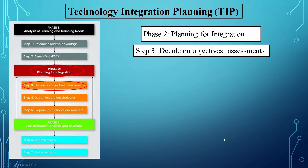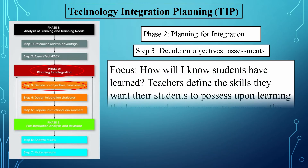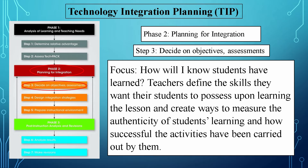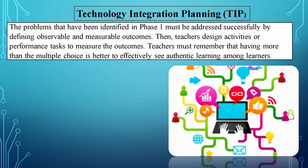Step 3: Decide on Objectives and Assessments. Focus: How will I know students have learned? Teachers define the skills they want their students to possess upon learning the lesson and create ways to measure the authenticity of students' learning and how successfully the activities have been carried out. The problems identified in Phase 1 must be addressed by defining observable and measurable outcomes. Then teachers design activities or performance tasks to measure those outcomes. Teachers must remember that having more than multiple choice assessments is better to effectively see authentic learning among learners.